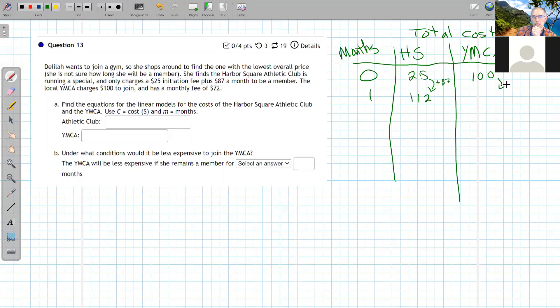The YMCA adds $72 per month, so that's a total of $172. At first, Harbor Square is a better deal, but you're paying $15 more per month. So eventually, the YMCA should be a better deal.